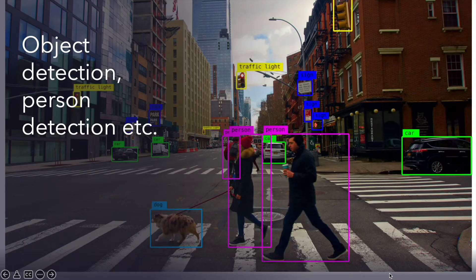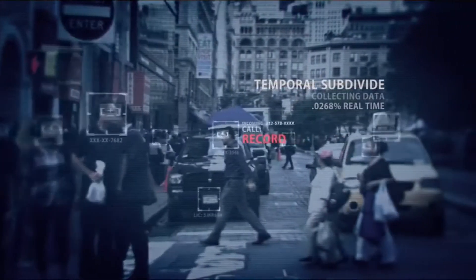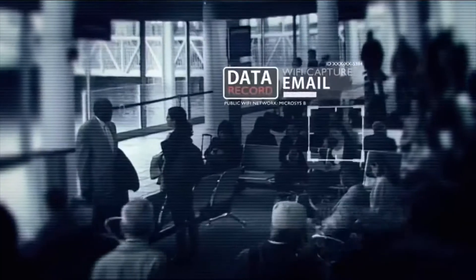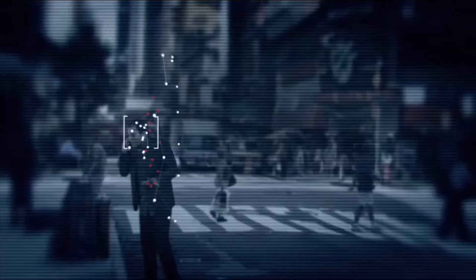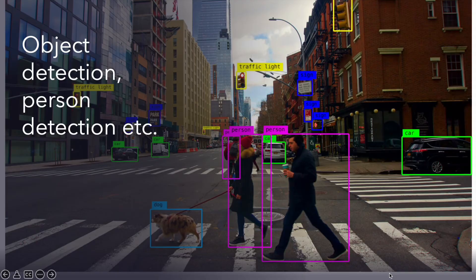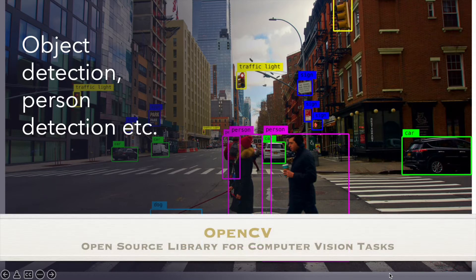Another well-known example is object detection. If you watch Person of Interest, you can remember this intro — the machine uses machine learning algorithms to detect persons. Moreover, autonomous cars use various object detection systems; their system should distinguish objects, people, other cars, or traffic signs. You can check OpenCV as an open source library for computer vision projects.